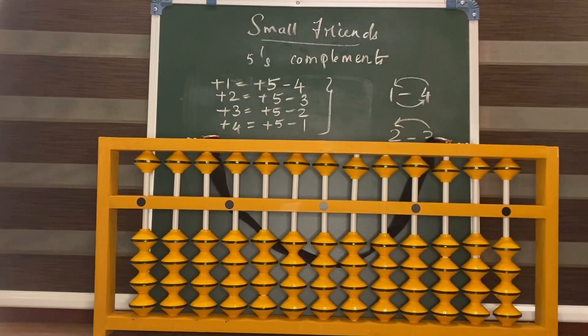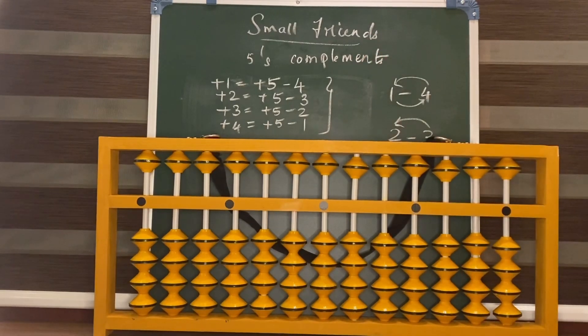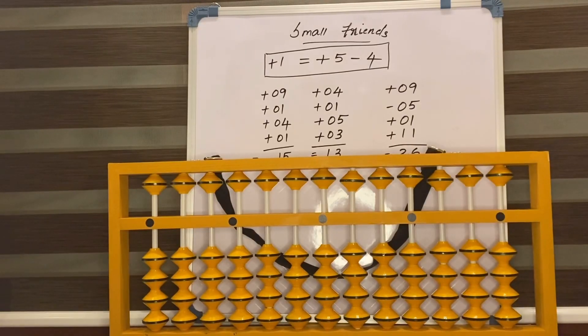Here are the formulas. Here are some examples for the formula. Add 1 is equal to add 5 less 4. Now, shall we start?